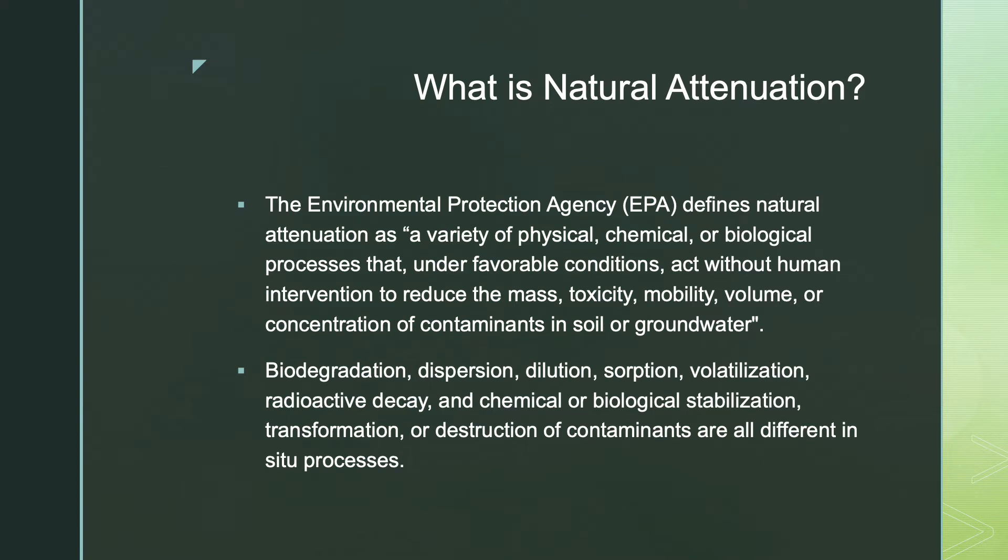So what is natural attenuation? The Environmental Protection Agency, or EPA, defines natural attenuation as a variety of physical, chemical, or biological processes that, under favorable conditions, act without human intervention to reduce the mass, toxicity, mobility, volume, or concentration of contaminants in soil or groundwater.